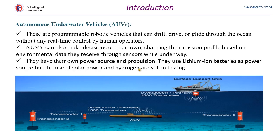The next type is autonomous underwater vehicle. These are programmed robotic vehicles which are operated without any real-time control by humans. They make their own decisions based on the mission they have been allotted to perform. They also change their plans based on environmental data received by sensors and other components. They have their own power source and propulsion, unlike ROVs, and use lithium-ion batteries, though the use of solar power is still in testing.